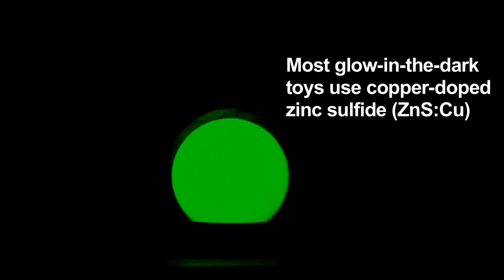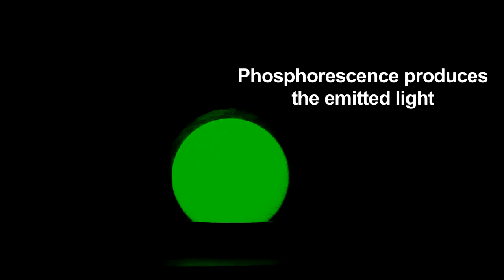The light provides energy to electrons in the coating, promoting them to higher energy levels. Once the light is off, these electrons slowly lose their added energy and return to their lower energy ground states. The energy lost is given off as light.